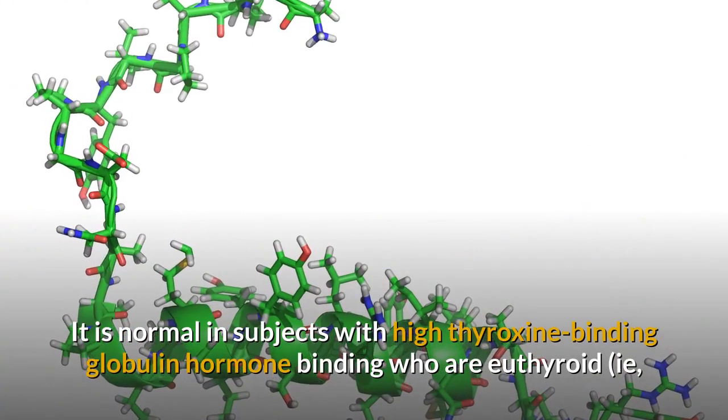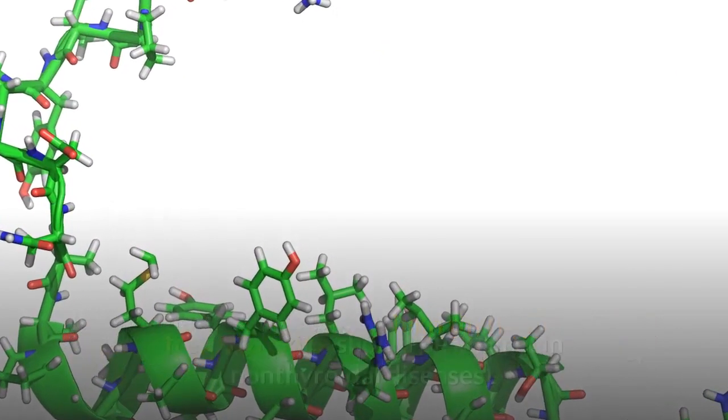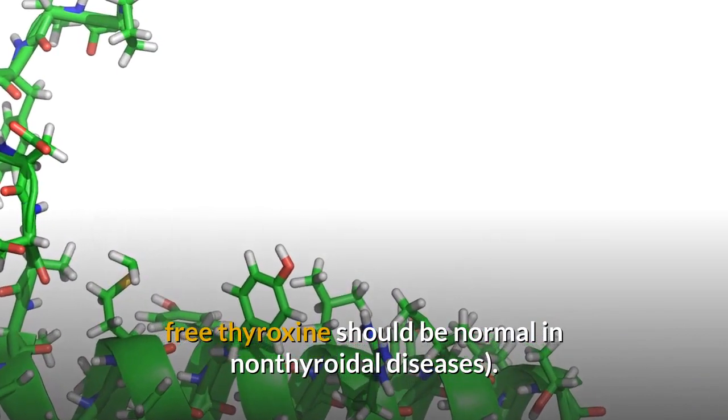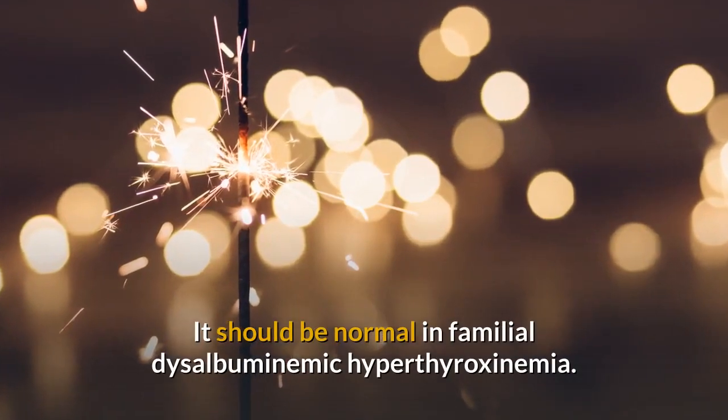It is normal in subjects with high thyroxine-binding globulin hormone binding who are euthyroid. Free thyroxine should be normal in non-thyroidal diseases and should be normal in familial disalbuminemic hyperthyroxinemia.